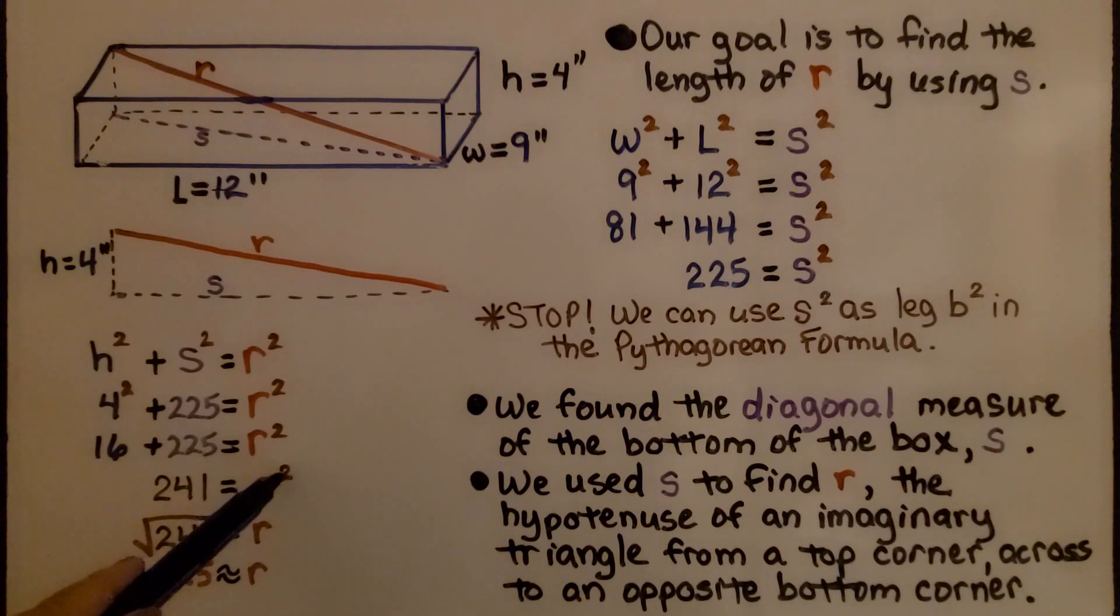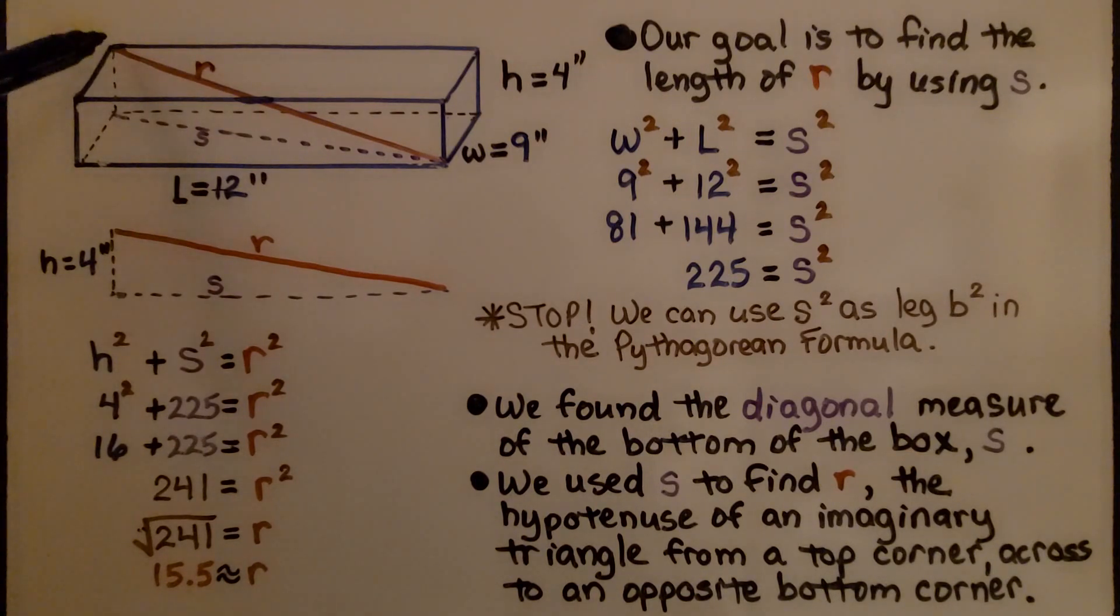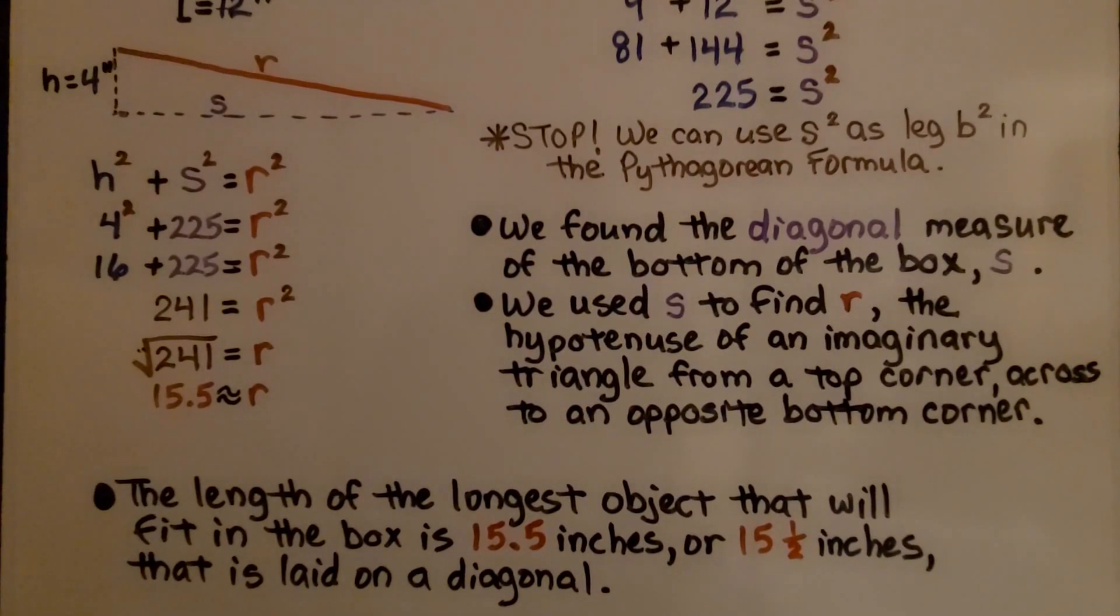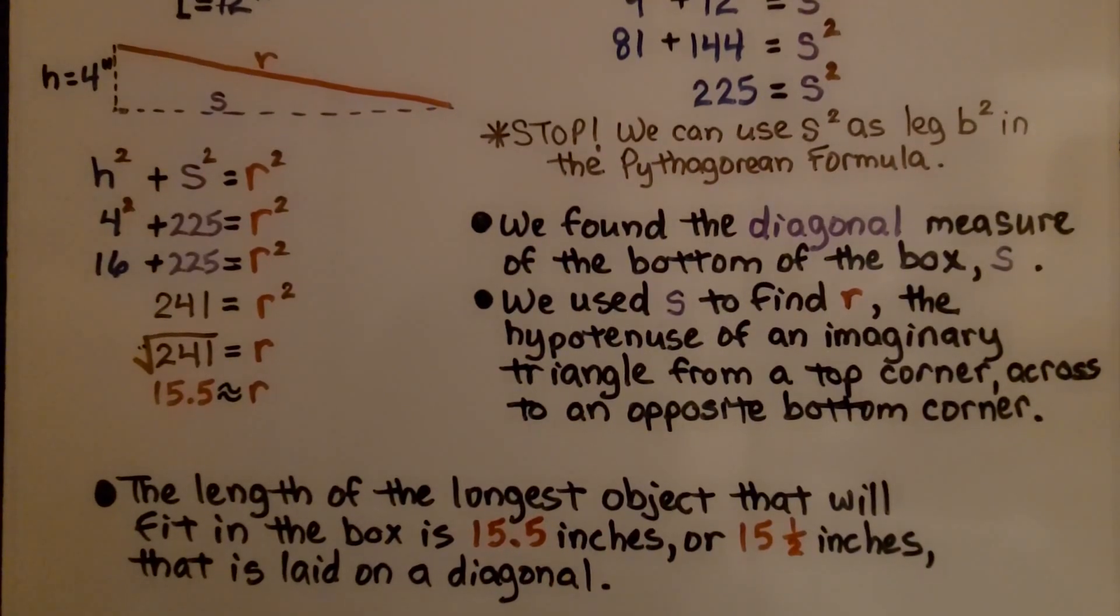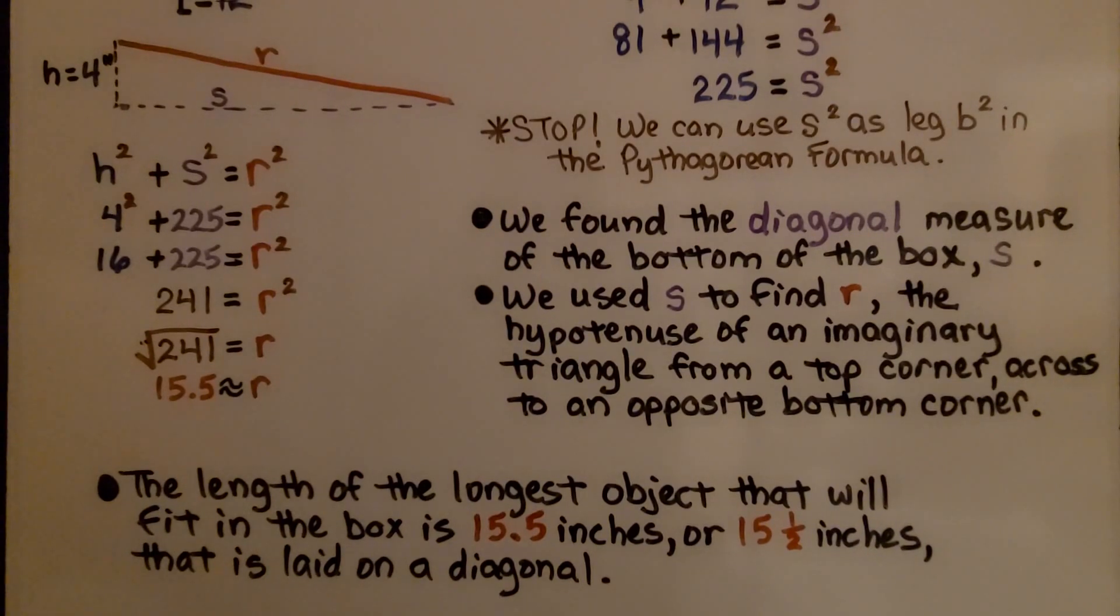Now we take the 2 exponent away from the r and put the radical sign around the 241. And we find the square root of 241 and it's approximately 15 and 5 tenths, 15 and a half. So we know r is approximately 15 and a half inches. We used s to find r, the hypotenuse of an imaginary triangle, from a top corner across to an opposite bottom corner. The length of the longest object that will fit in the box is 15 and 5 tenths inches or 15 and a half inches that is laid on a diagonal.